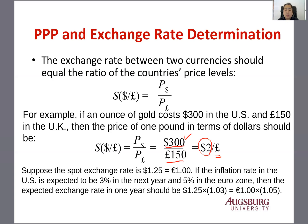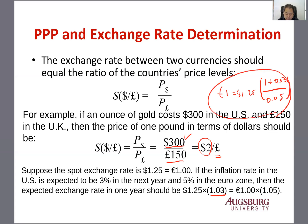Suppose the spot exchange rate is $1.25 per pound, and the inflation rate in the U.S. is expected to be 3% and 5% in the Eurozone next year. Then the expected exchange rate should change to: 1 euro equals $1.25 spot times (1 plus 3% U.S. inflation) divided by (1 plus 5% Eurozone inflation).